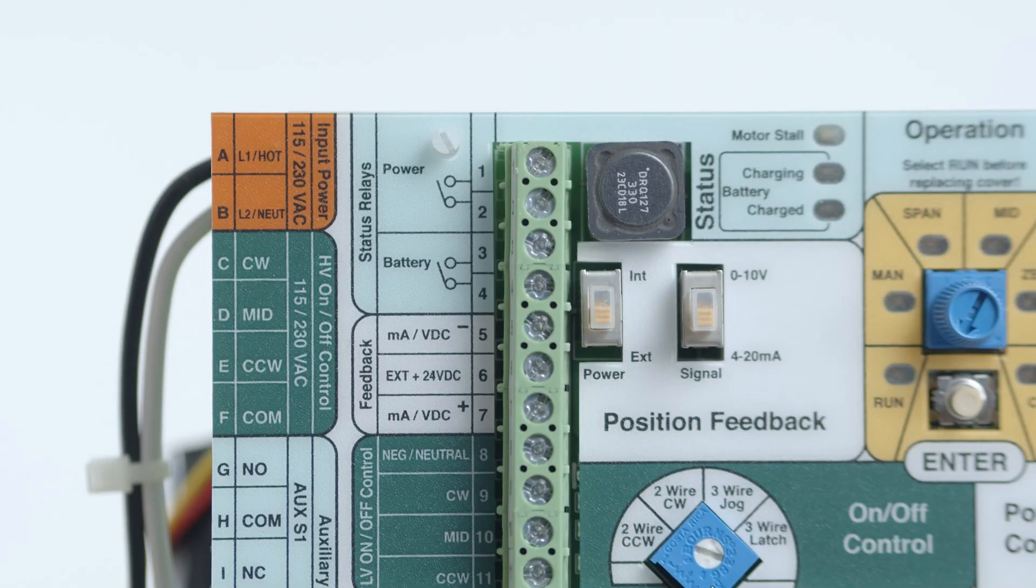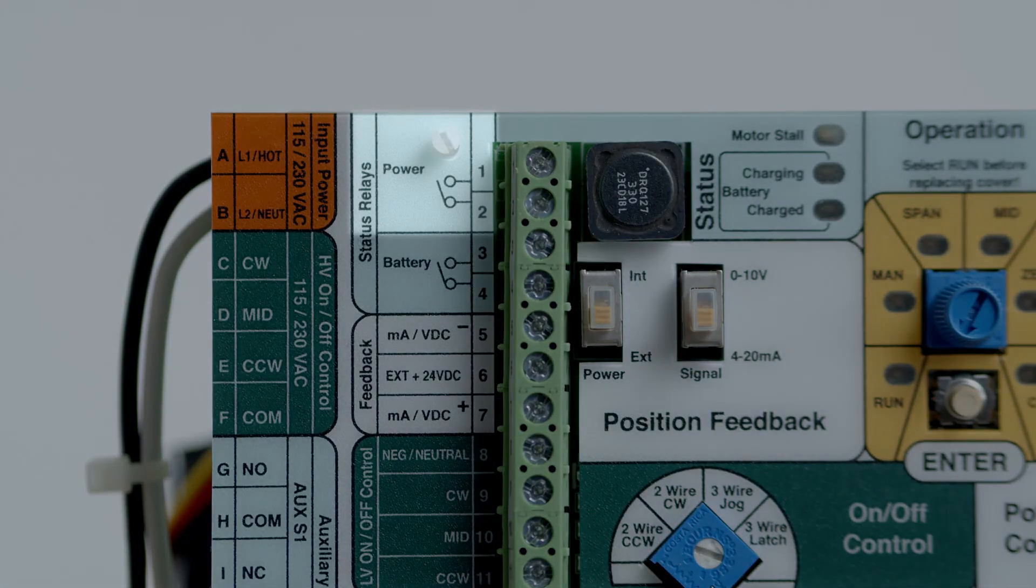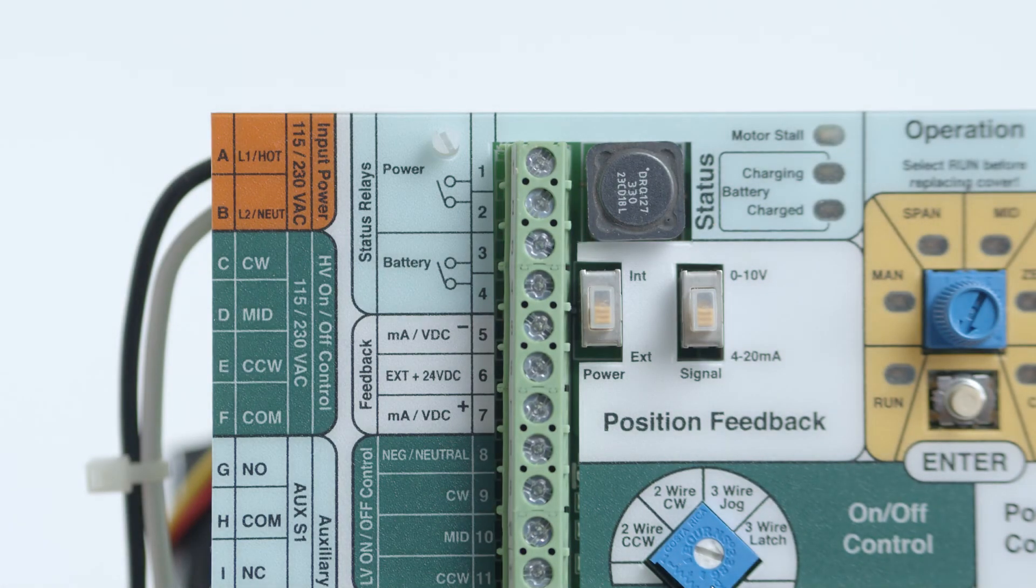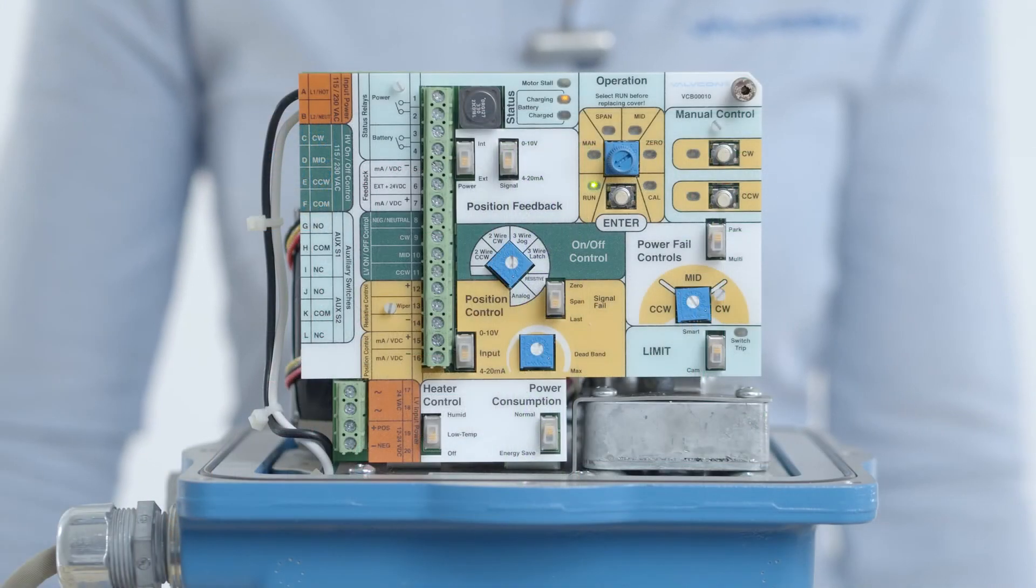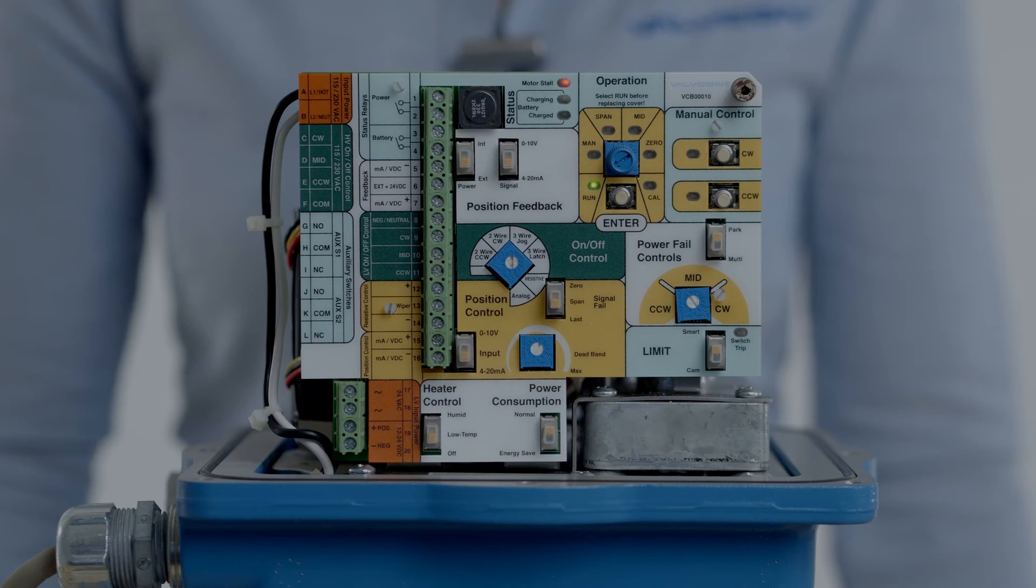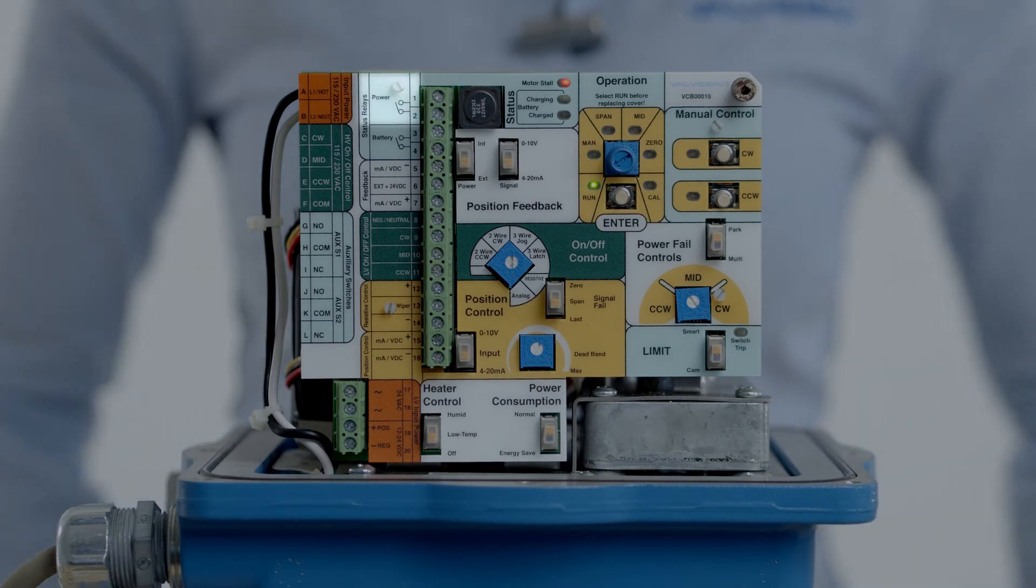The board also includes a power status output that can be monitored remotely. This confirms the power is reaching the low voltage side of the universal control board. Additionally, if the unit encounters a motor stall, the output will alternate between on and off to provide the stall indication remotely.